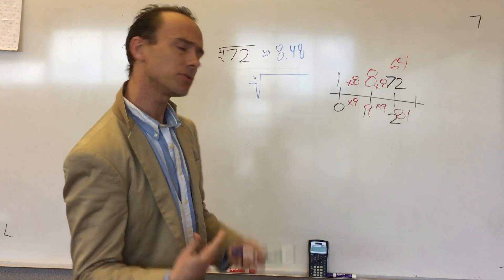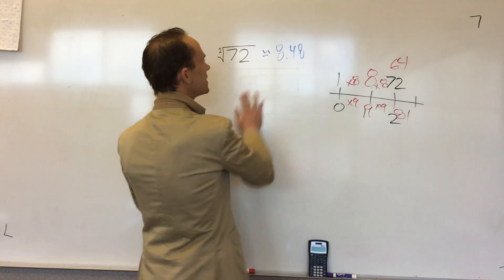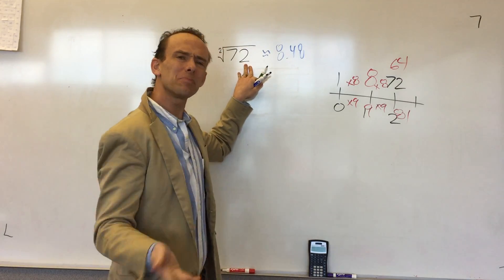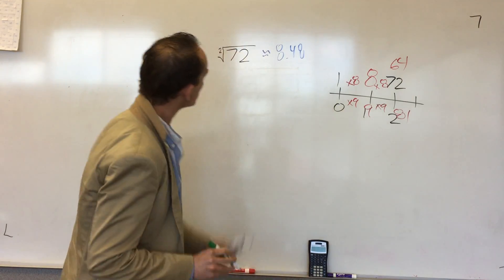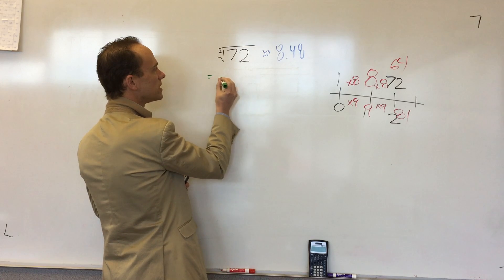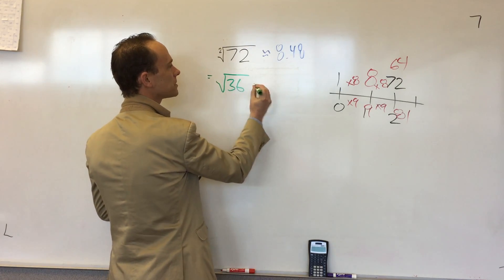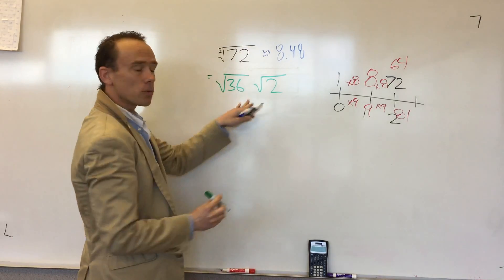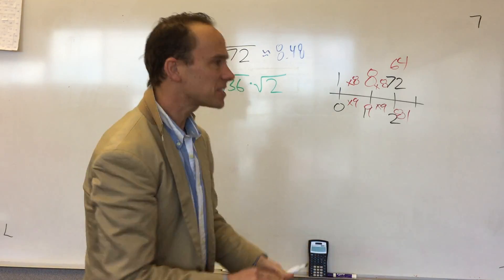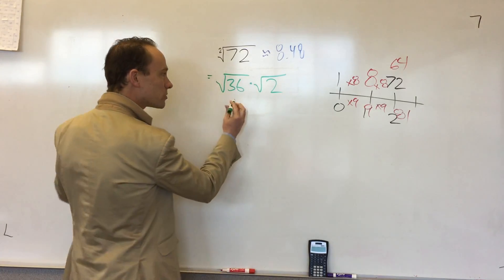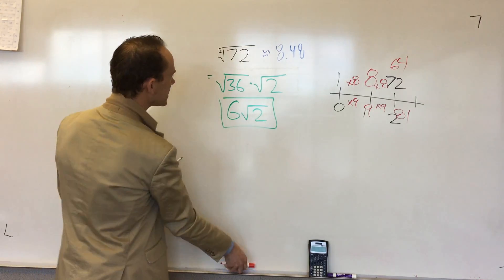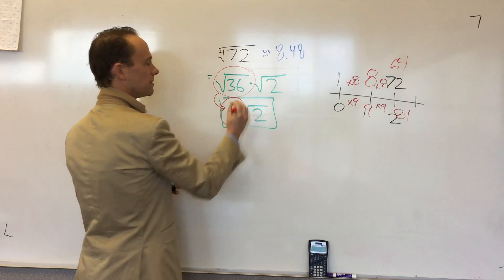There are two techniques students use most often. The first technique is called the search for perfect squares — you look to see if any of the factors of this number are a perfect square. So they come to something like this and they say, 72. They remember that 72 is equal to 36 multiplied by 2. What's nice about this is that 36 is a perfect square. If you can find a factor that's a perfect square, then look what you get to do — you get to evaluate that thing.